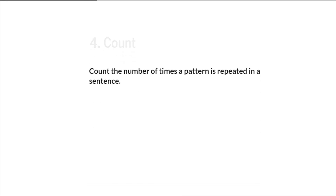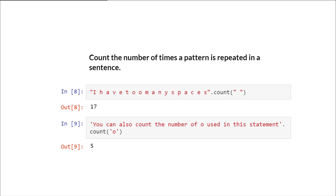Next we have the count method. It will count the number of times a pattern is repeated in a sentence. For example, in this string we count how many times we got a space — it is 17. And if we have another statement and want to count the number of 'o' present in this string, it is 5.